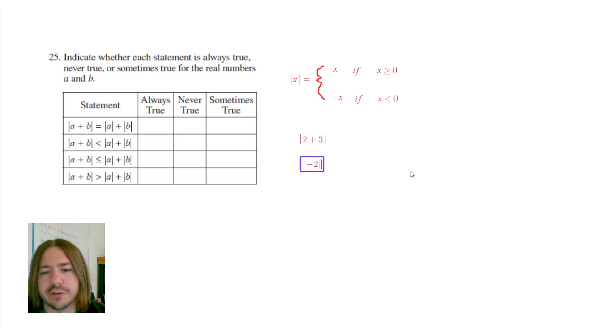We could do negative 2 plus 3. How about we do 2 plus negative 3, so 2 minus 3. And then let's let our last one be the absolute value of negative 2 plus negative 3. So we have a bunch of examples here, these are really the only four examples in terms of the signage here, and we'll see what happens.